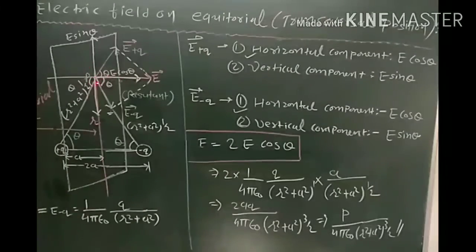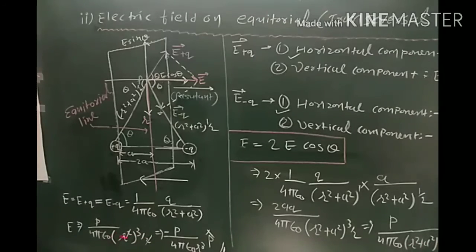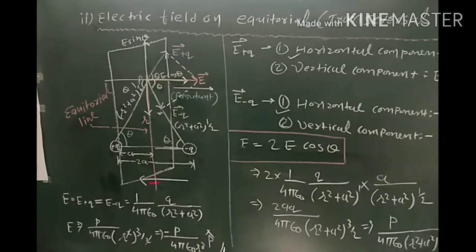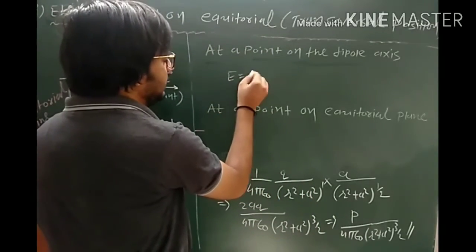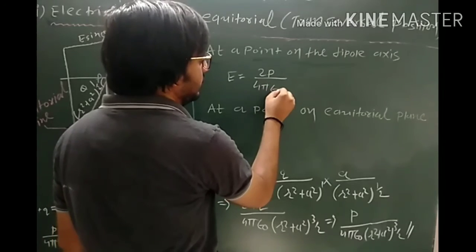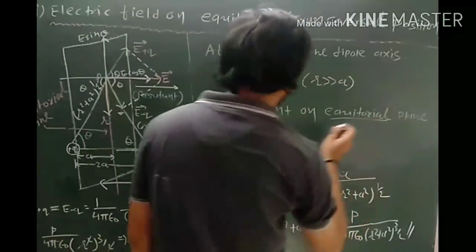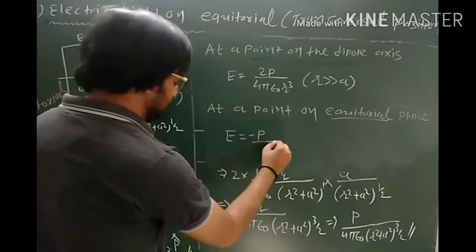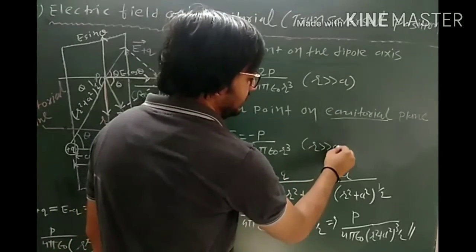Now, if the point P on the equatorial line is very far from the electric dipole (r >> a), the field simplifies. On the dipole axis, the electric field is E = 2p / (4πε₀ r³), while at a point on the equatorial plane, the electric field is E = −p / (4πε₀ r³), where r >> a. The two fields are opposite in direction.